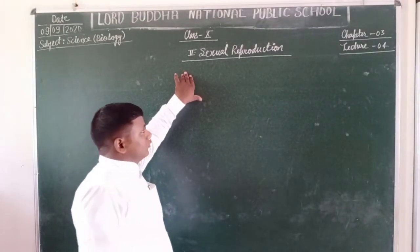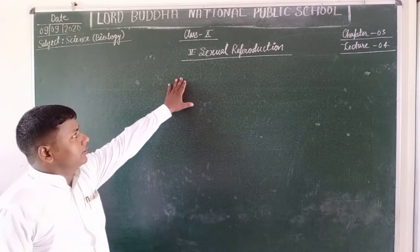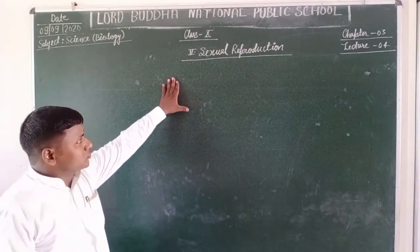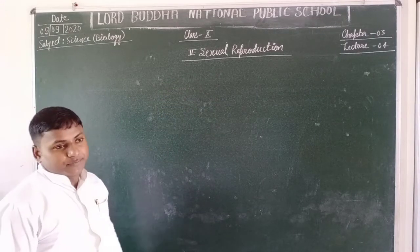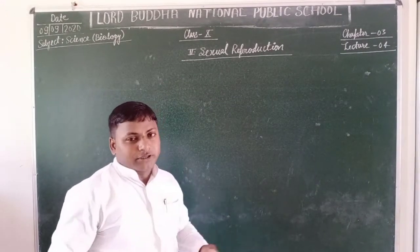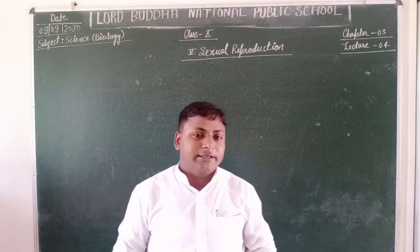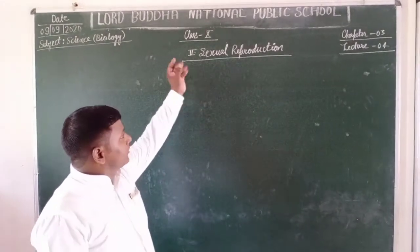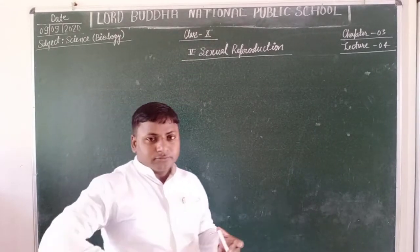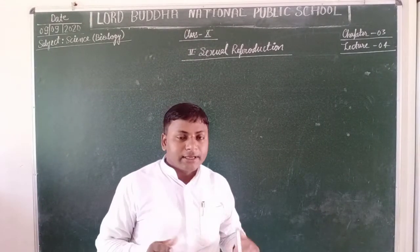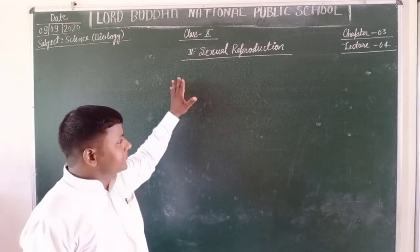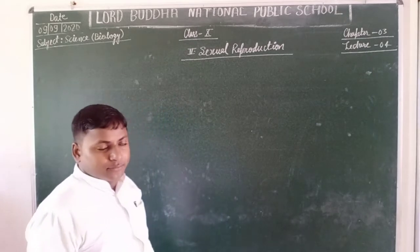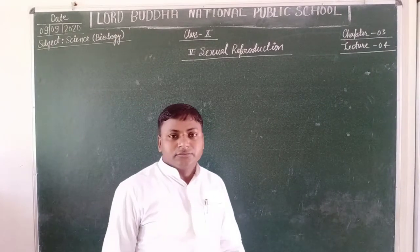Today we are going to discuss another mode of reproduction — sexual reproduction. This type of reproduction is found in the higher categories of organisms. Sexual reproduction may be defined as the kind of reproduction in which the fusion of male and female gametes takes place to form a zygote.